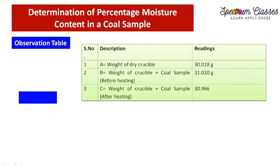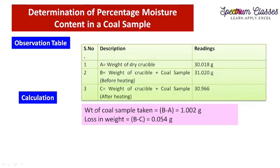In the observation table: the weight of the dry crucible (A) is recorded. The weight of the crucible plus coal sample before heating (B) was 31.020 grams, and the weight of the crucible plus coal sample after heating (C) was 30.966 grams — this is less because some volatile material escaped. To calculate: the weight of coal sample taken is B minus A, giving us the initial coal mass. Since B is the before-heating weight and C is after heating, B minus C gives the loss in weight.